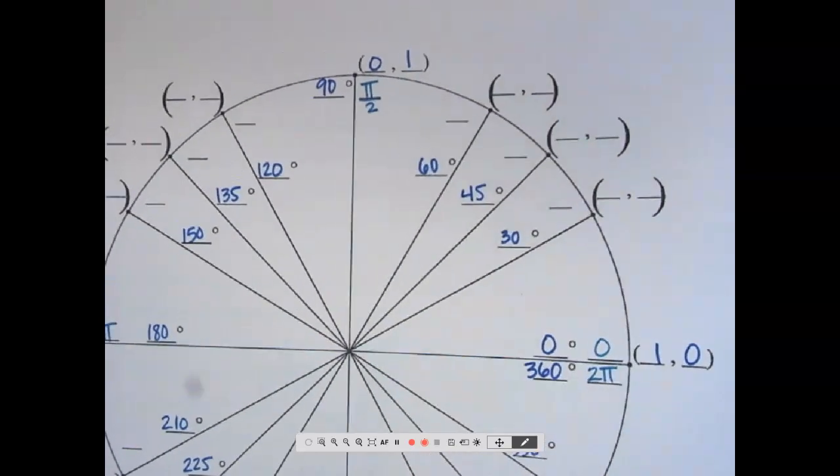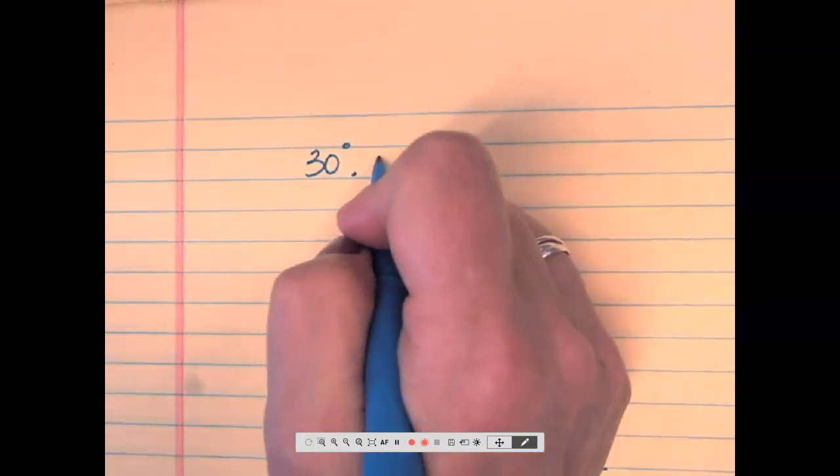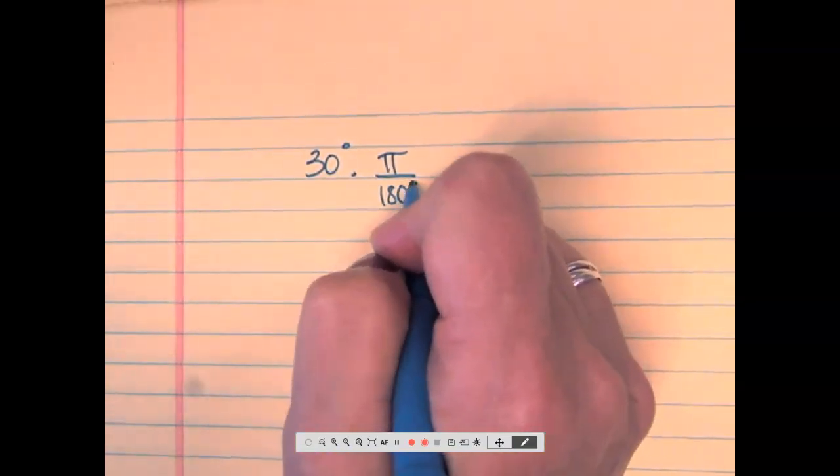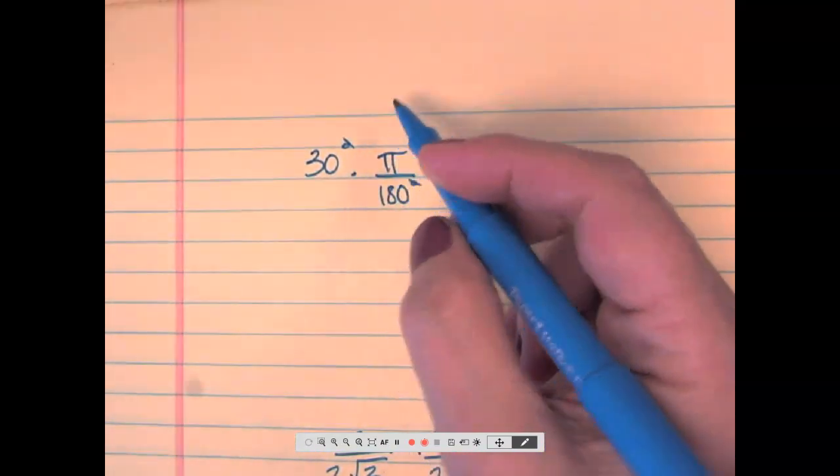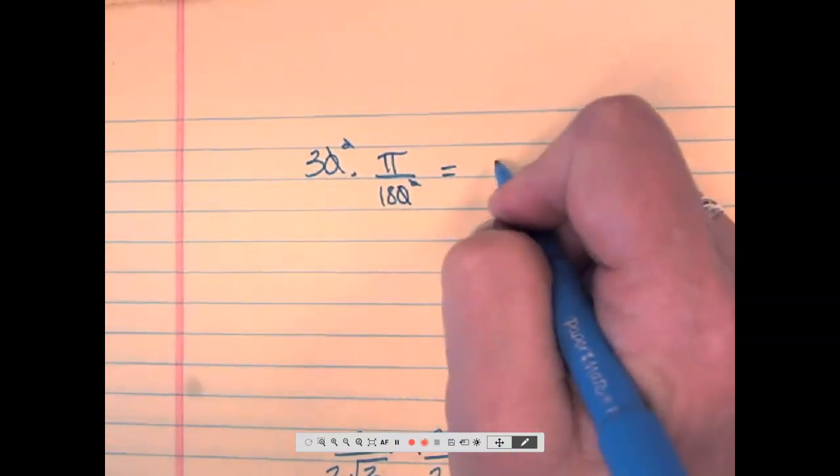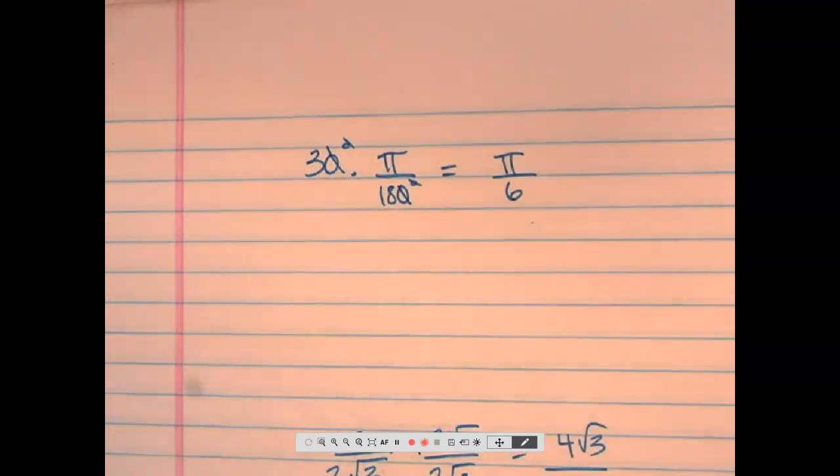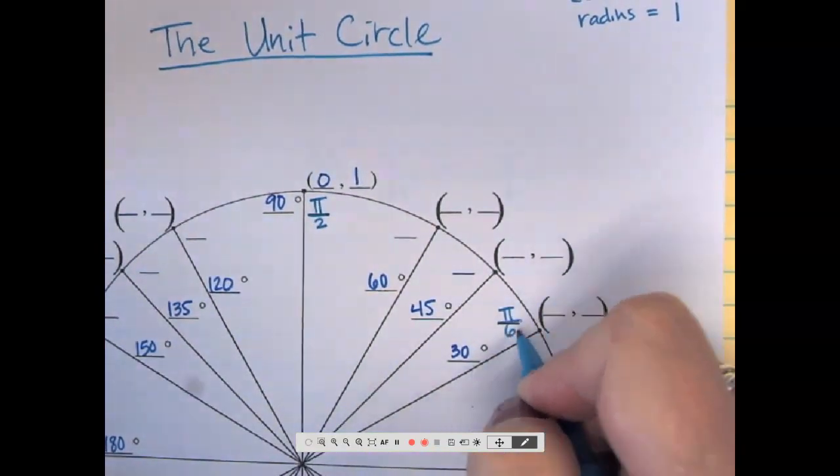So someone tell me how to convert 30 degrees to radians. Pi over 180. Very good. The degrees cancel. And pi stays. The zeros cancel. What does 3 over 18 reduce to? 1 sixth. So we'll just say pi over 6. So that's 1 sixth pi. That's my 30 degrees, pi over 6.